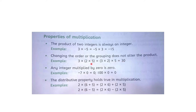Donon surton mein answer 30 aata hai. Repeat karta hoon: the product of two integers is always an integer. Example: 3 into minus 5 = minus 15; minus 5 into 3 = also minus 15. Donon surton mein answer minus 15 aayega.